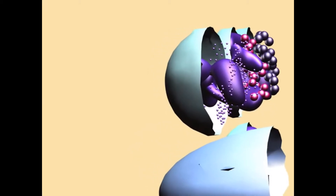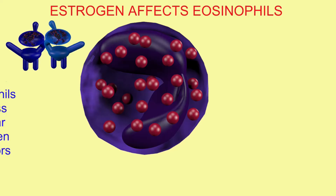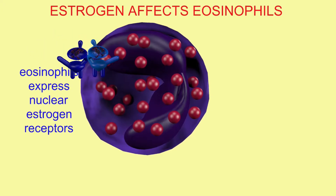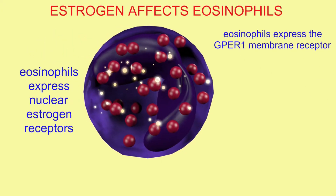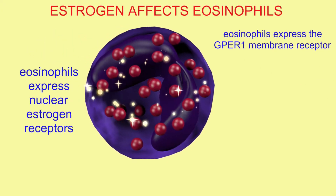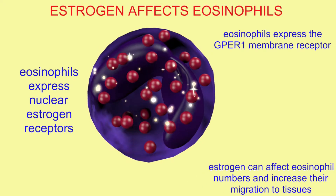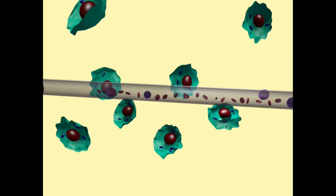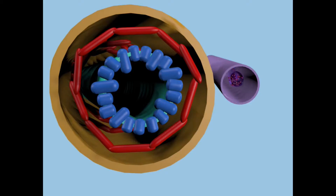Neutrophil numbers in general increase as estrogen levels increase, and neutrophil numbers will decrease after menopause when estrogen levels drop. Eosinophils express the nuclear estrogen receptors and also express the G-protein coupled receptor on the cell membrane. Estrogen can affect the numbers of eosinophils and increases their migration to tissues.